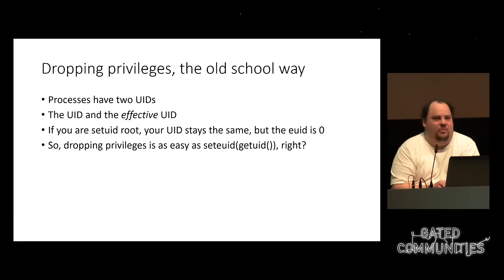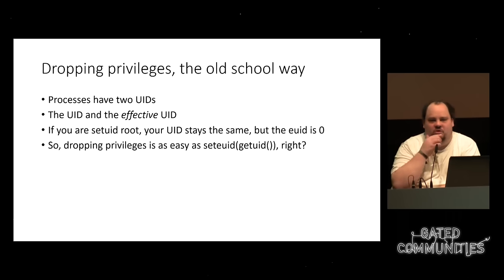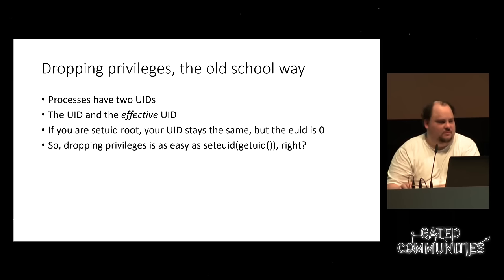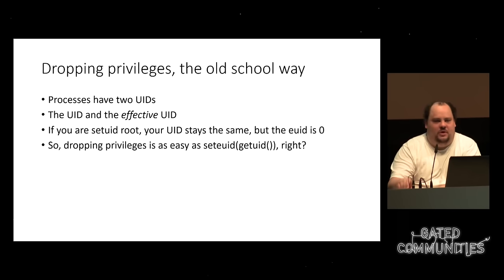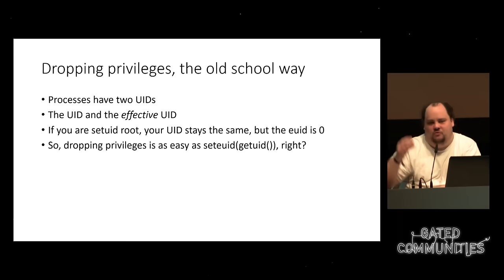Let's get to the dirty details. First, the old-school way — what ping is supposed to do, what we did in the 90s. You have two UIDs in the process data structure in the operating system: the real UID and the effective UID. If the program is set-UID, the effective user ID is the one that the binary is set-UID to. So if the program does anything, the kernel looks at the effective UID, not the real UID. To drop your privileges, you could say: set effective UID to get UID, to drop back to the real user ID.